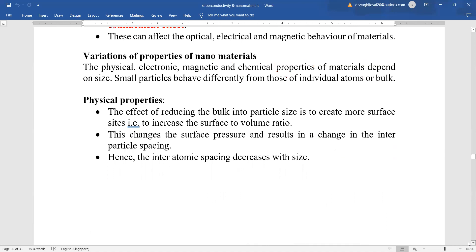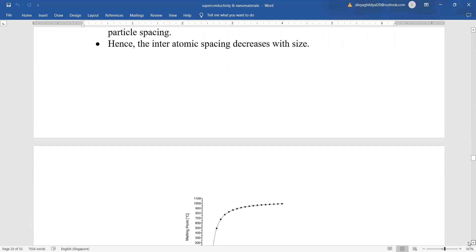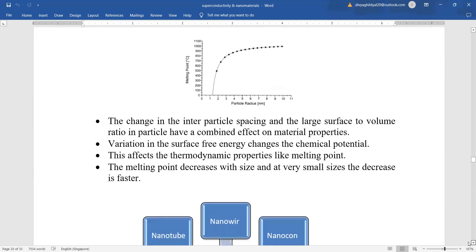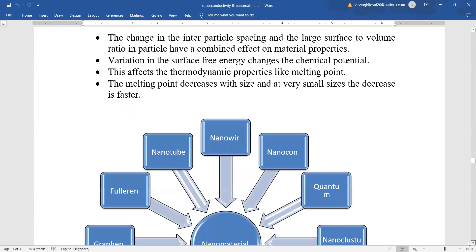Nanoparticles are the physical properties. The effect of reducing the bulk size into particle size is to create more surface site. This changes the surface pressure and results in a change in the interparticle spacing. The change in interparticle spacing and large surface to volume ratio in particle have a combined effect on the material properties.